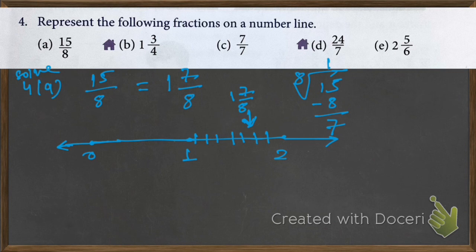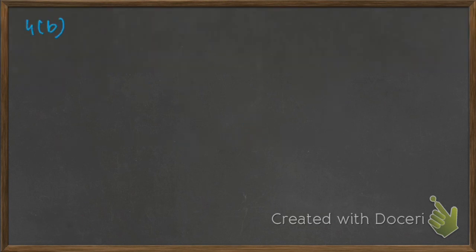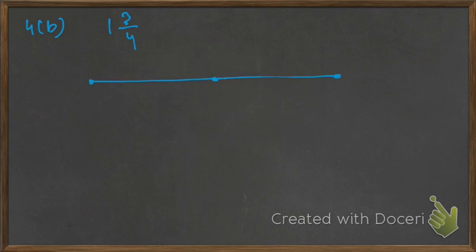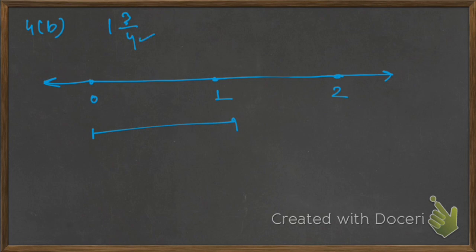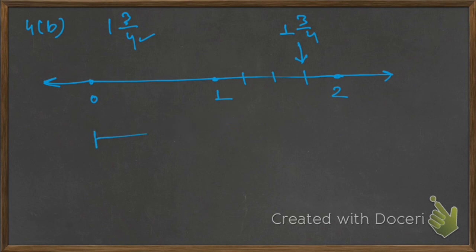We need to divide this space between 1 and 2 into 8 parts. I have divided into 4 parts, now 1, 2, 3, 4, 5, 6, 7, 8 — now I have divided into 8 parts. This will become your 1 and 7 upon 8, because this is 1 whole part and this is 7 upon 8.